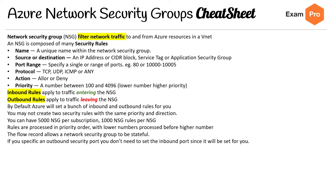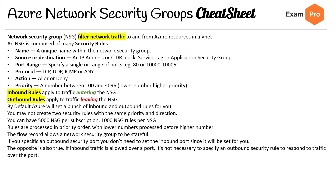If you specify an outbound security port, you don't need to set the inbound port since it will be set for you. The opposite is also true: if inbound traffic is allowed over a port, it's not necessary to specify an outbound security rule to respond to traffic over that port.